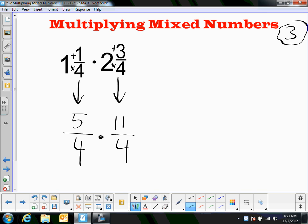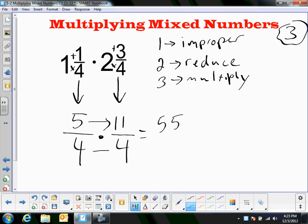First, change to improper. I did that. Second, reduce if I can. And, so, I'm looking at 5 and 4. I can't reduce 5 and 4. And, I'm looking at 4 and 11. And, I can't reduce that either. So, that brings me to step 3, multiply. So, multiply straight across. Can't reduce. So, 5 times 11 is 55. And, 4 times 4 is 16.